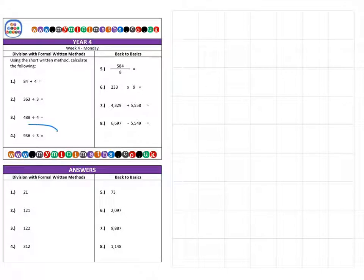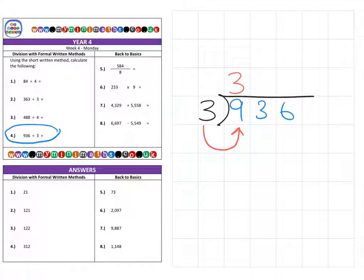Finally, question four: 936 divided by 3. So 936 apples shared between three people. How many threes fit into 9 or 900? That's 3 or 300 as it's in the hundreds column. How many threes fit into 3? That's 1, so 10 in the tens column. How many threes fit into 6? That's 2 for a final answer of 312.